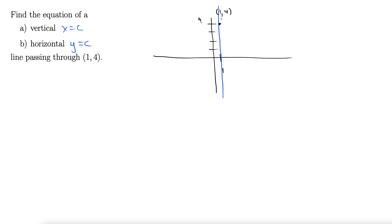And the vertical line only cares about the x value as of the form x equals c. So for part a, we have x equals 1. There we go. That's a vertical line going through the point 1, 4.